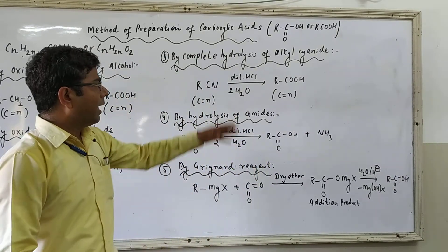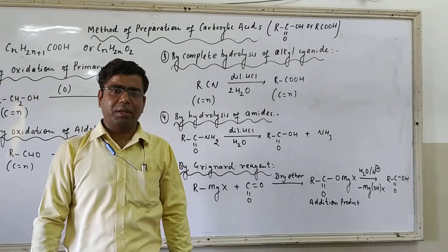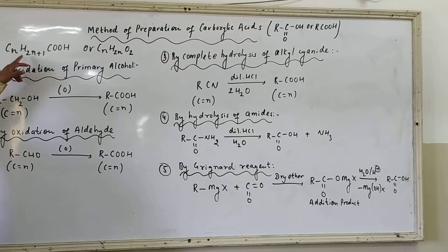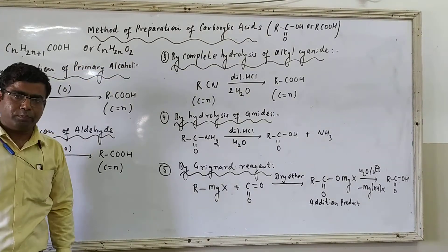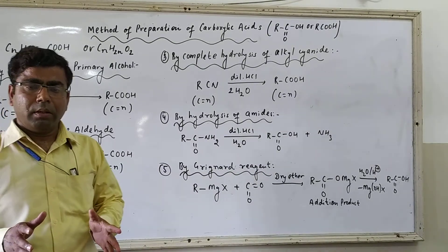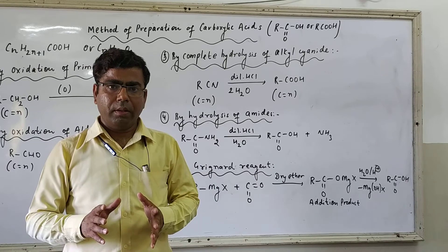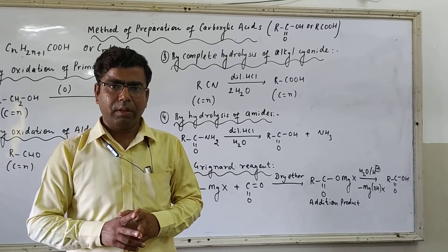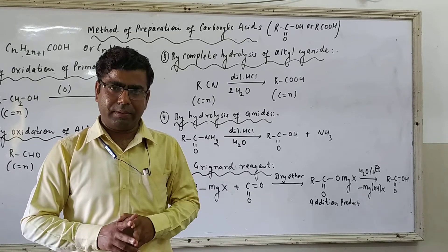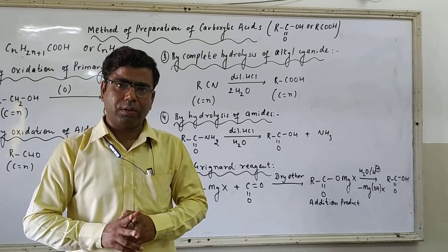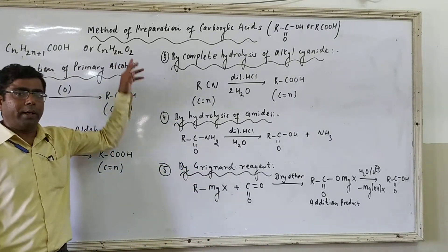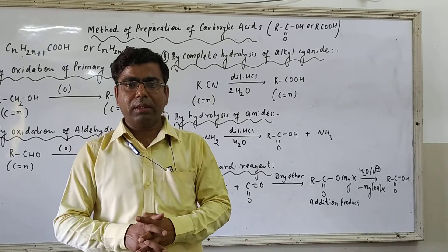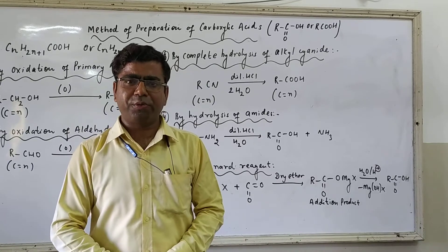Before that, RC(=O)OH is the general representation of carboxylic acid, and their general molecular formula can be written as CₙH₂ₙ₊₁COOH or CₙH₂ₙO₂. Please remember, in organic chemistry we have two organic compounds which contain two oxygen atoms — carboxylic acid and esters. Esters also follow this general molecular formula CₙH₂ₙO₂. So we can say that esters exhibit functional isomerism with carboxylic acid because their general molecular formula is the same but the functional group present is different.